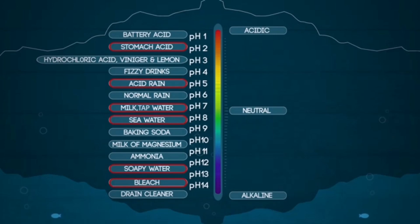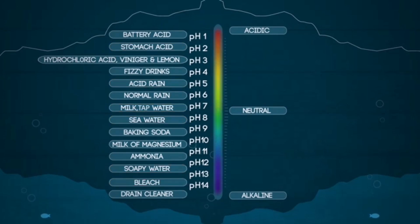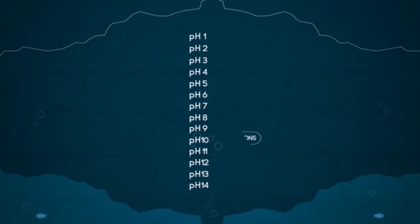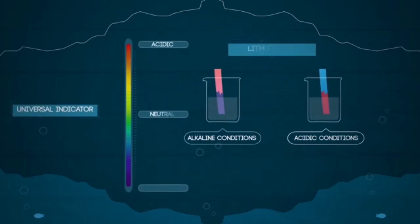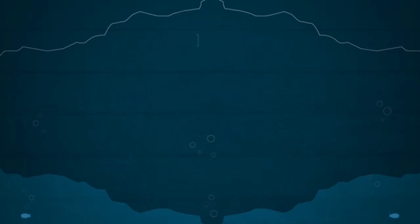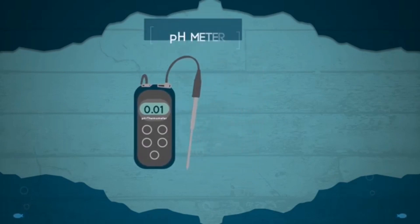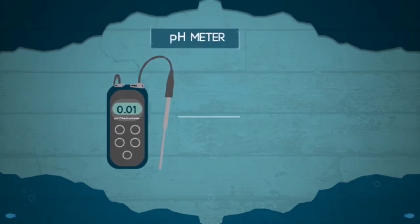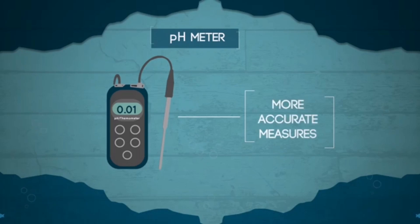Universal indicator is very useful due to its ability to indicate the entire pH spectrum. There are other indicators that show other color changes, but these two are the ones you need to know. We can also get even more accurate pH readings using a pH meter, which gives readings to 0.01 of the pH scale.